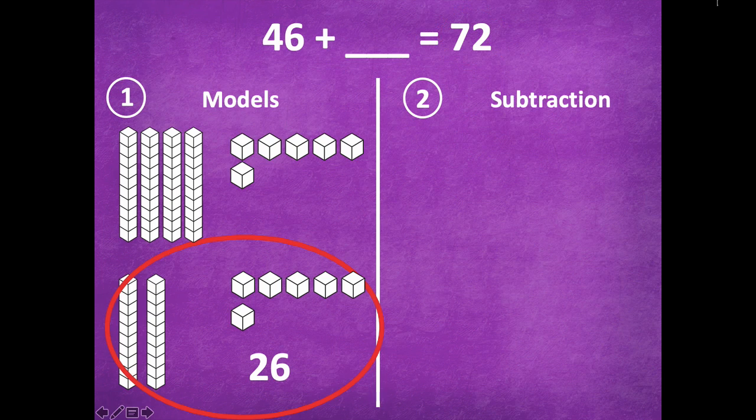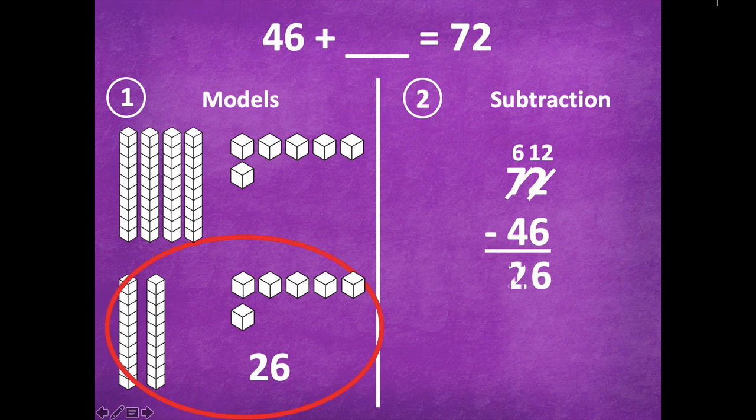All right, let's try with our subtraction to see if we get the same number. So we're going to start with our sum and subtract the addend that we do know. So our problem would look like this: 72 minus 46. So you're going to solve this problem by starting in the ones place. Well I have 2 ones, I can't take away 6, so I need to decompose a ten. I'm going to take one of those tens, and now that turns into 6, and 1 ten turns into 10 ones. So 10 ones plus 2 ones gives me 12 ones. Now I have enough to subtract, so I know that 12 minus 6 equals 6, and 6 minus 4 equals 2.